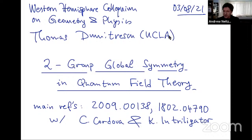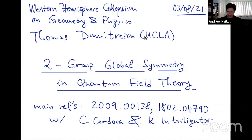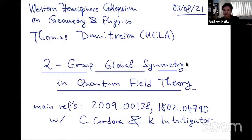All right, so maybe I'll fire up here. Welcome, everyone, once again to the Western Hemisphere Colloquium in Geometry and Physics. The format is a 60-minute talk followed by about 15 minutes or so for questions. If you have a question during the main 60 minutes, please just type it into the chat, send to everyone, and I'll aggregate those questions and feed them to the speaker. Or at the end of the talk, we'll have a usual question session where you can ask your questions out loud. Today we're very happy to have Thomas Dimitrescu from UCLA, who will tell us about two-group global symmetry in quantum field theory.